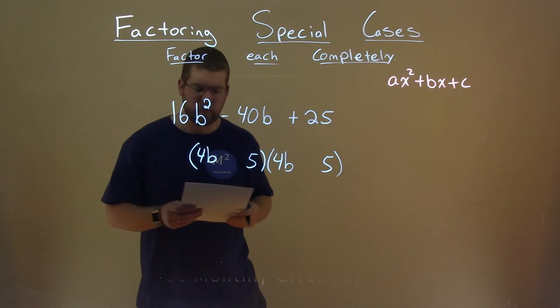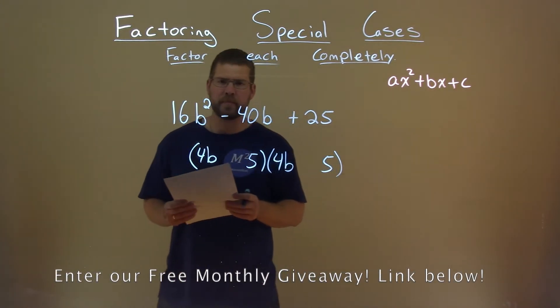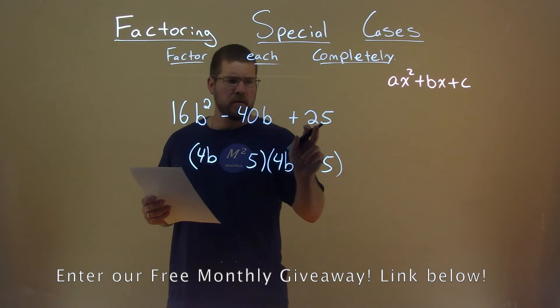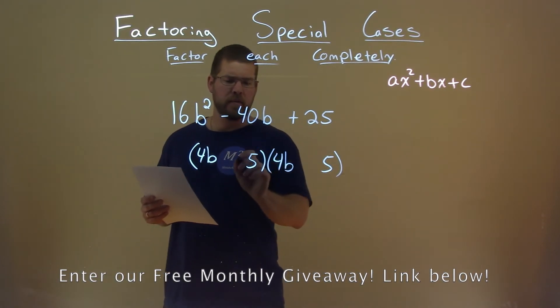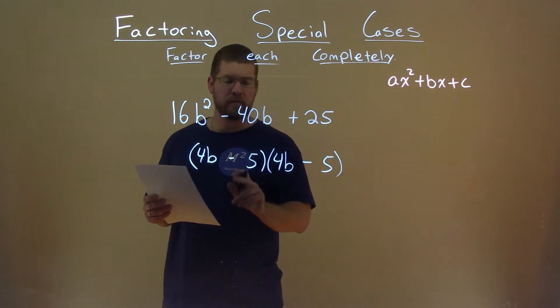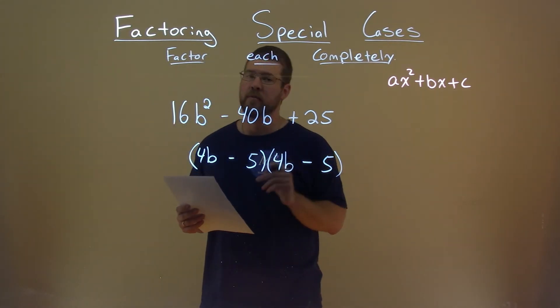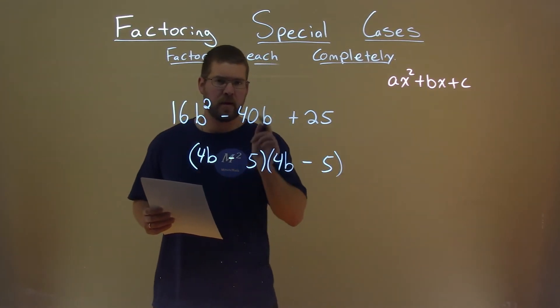We have a minus 40 right there. Well, the 25, if they're both positive, we have a negative number. If I make this actually a negative and a negative, negative 5 times negative 5 gives me the positive 25. Now watch this,